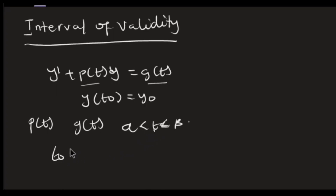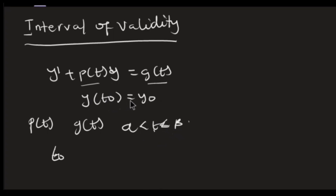Once they satisfy this, it means that the interval that will have t₀ — which is our initial condition — will then be the interval of validity. In summary, if you have a linear differential equation and p(t) and g(t) are continuous on an open interval a less than t less than b, then the interval containing t₀ becomes our interval of validity.